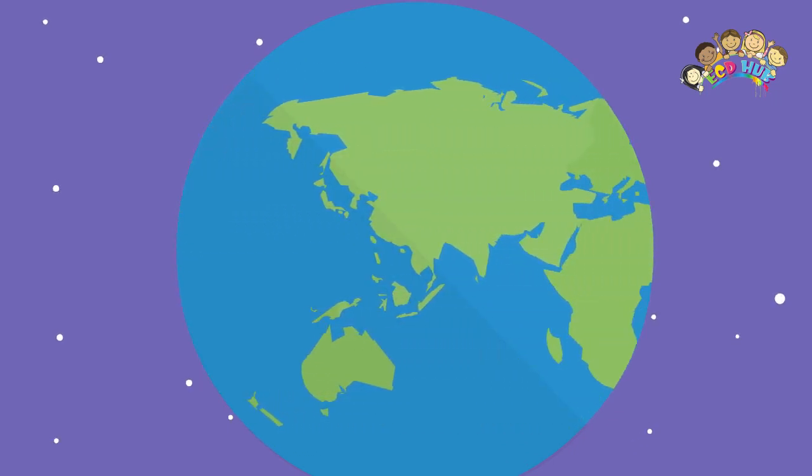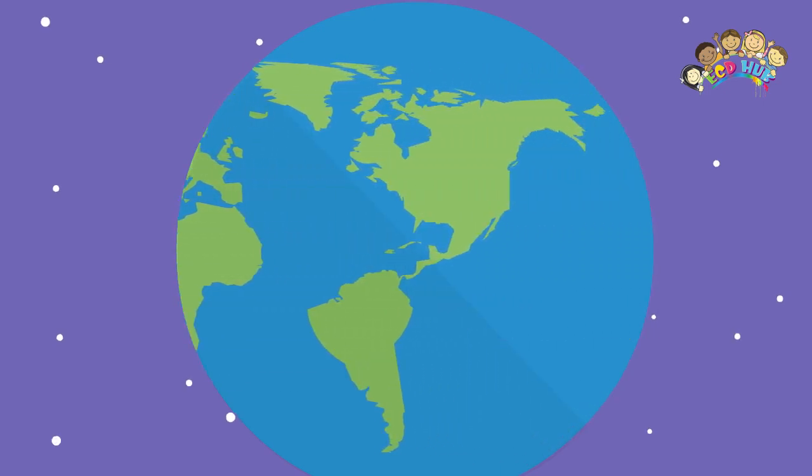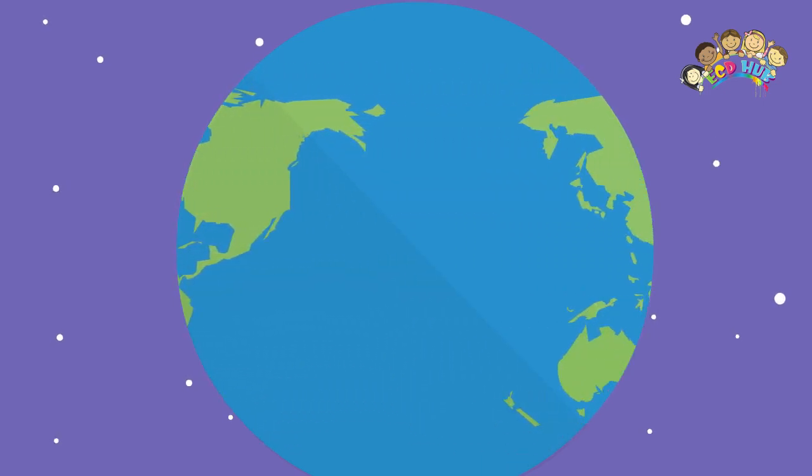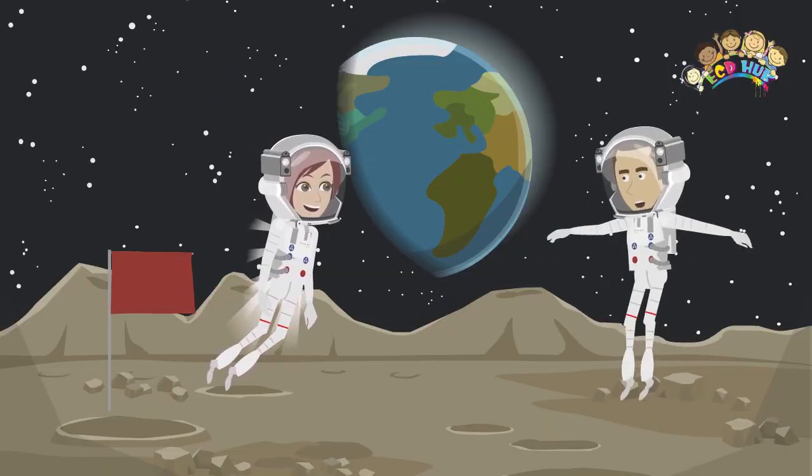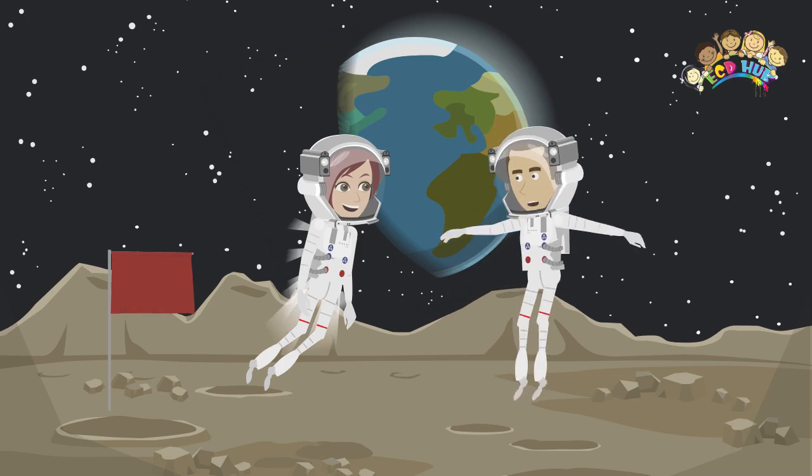There's not much friction in a fidget spinner toy—that's why they can spin for so long. Now imagine the Earth floating in space. It will keep spinning unless something slows it down.